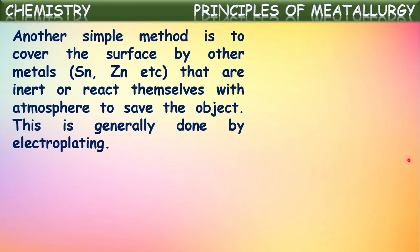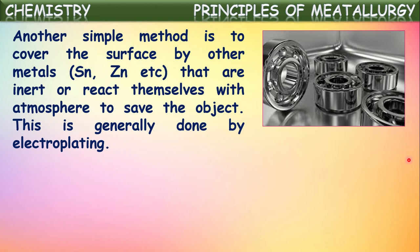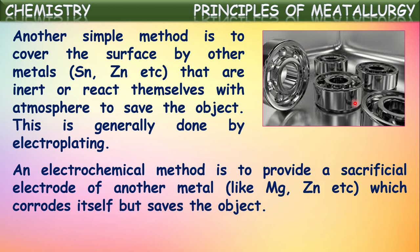This is one method. Another simple method is to cover the surface with another metal like tin, zinc, or chromium. These metals are used to cover iron to control corrosion, as they are inert or react less with the atmosphere. This is generally done by electroplating. Some iron articles are shown here coated with chromium by electroplating. This chromium coating on iron articles won't allow further corrosion. An electrochemical method is used to provide a sacrificial electrode of another metal like magnesium or zinc. The coating of a thin layer of zinc on metallic objects like iron is called galvanization.